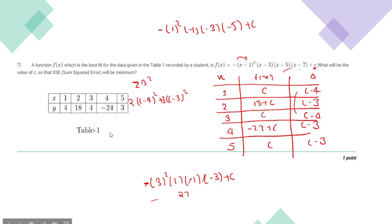Just differentiate it, so it will become 4 times (c minus 4) plus 6 times (c minus 3), and equate it to 0. So it will become 4c minus 16 plus 6c minus 18 equals 0.